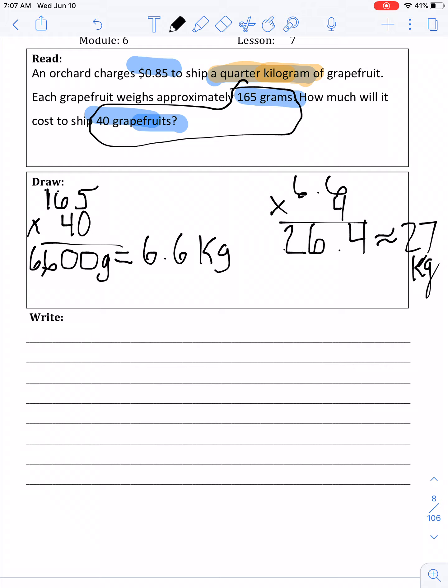So we now know that a quarter kilogram of 40 grapefruits is 27 kilograms. So now, the last step is to figure out the cost.